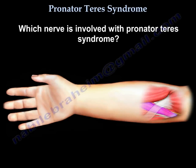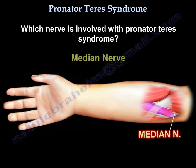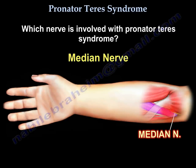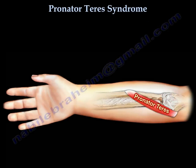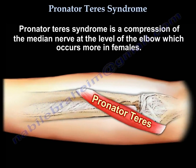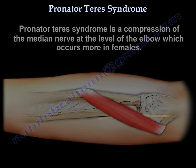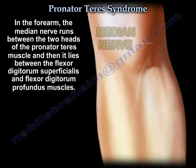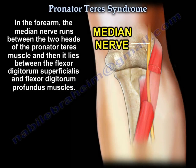Which nerve is involved with the pronator teres syndrome? It is the median nerve. Pronator teres syndrome is a compression of the median nerve at the level of the elbow, which occurs more in females. In the forearm, the median nerve runs between the two heads of the pronator teres muscle.